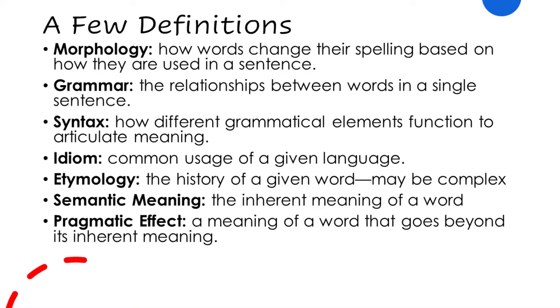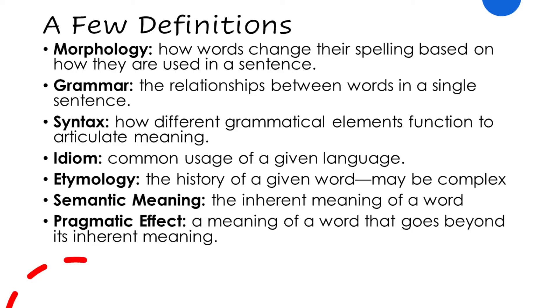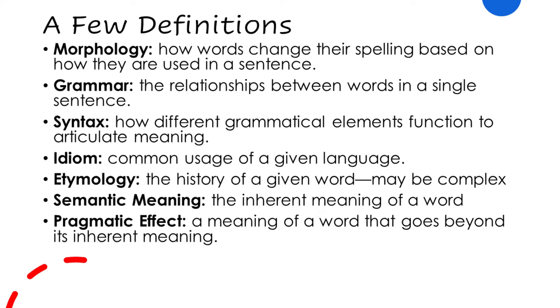Then we look at idiom, which is the common usage of a given language. If I were to say it's raining cats and dogs outside, PETA need not be afraid — we're not talking about animal abuse, but rather about it raining an awful lot, like it tends to here in Florida or Singapore for that matter. Etymology is the history of a given word, which may be complex. Especially in the New Testament, we'll see words with a Hebrew heritage going back to the Old Testament and the Greek Septuagint, coming into contact with Greek philosophy — a good example of that is the word 'flesh,' which we'll see later. And then we distinguish between semantic meaning — a word's inherent meaning that does not change regardless of context — and its pragmatic effect: what the word means in a specific context, which may go beyond what you'd find in a dictionary.